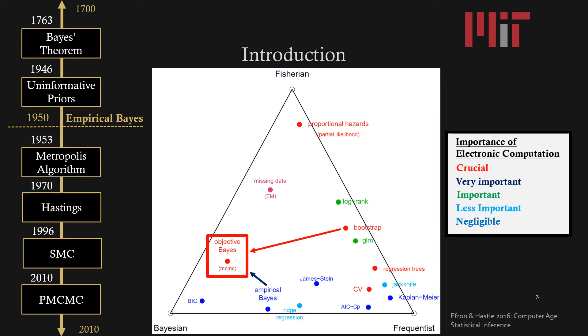PMCMC methods come out of Objective Bayes or MCMC, and as you can see in this diagram it has a crucial importance of electronic computation. For that reason it didn't grow to be as popular as it is today until about the 90s. The bootstrap and empirical Bayes are also very similar and influenced the evolution of these MCMC methods, and on the left you can see the timeline that led to the invention of PMCMC.